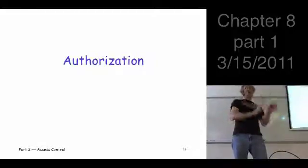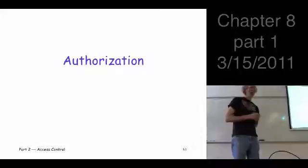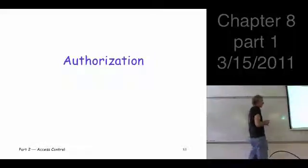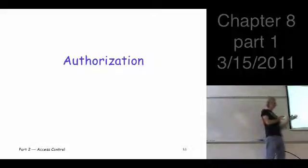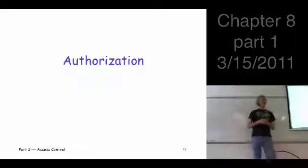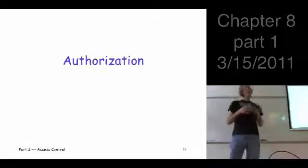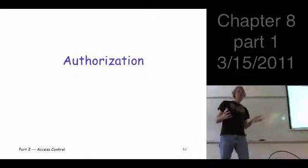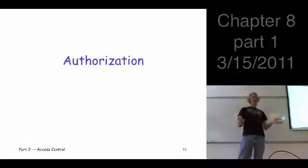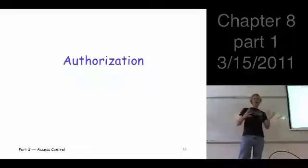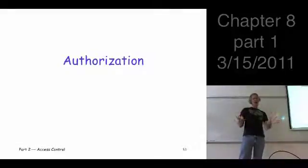Now on to Chapter 8: Authorization. What's the difference between authorization and authentication? Assuming you're an authenticated user — or somehow you got access — now what are you allowed to do? How do we place restrictions on your actions, and how are those things enforced?